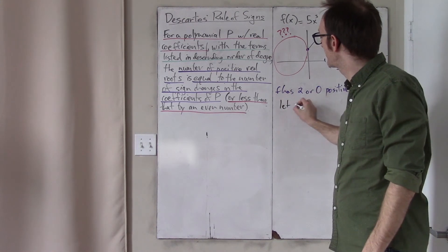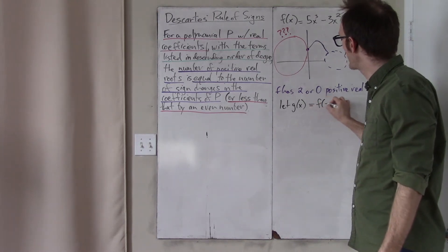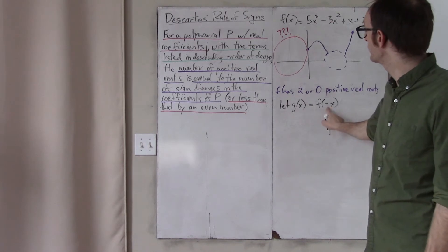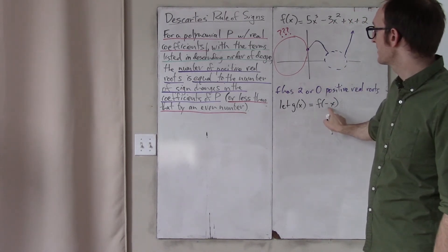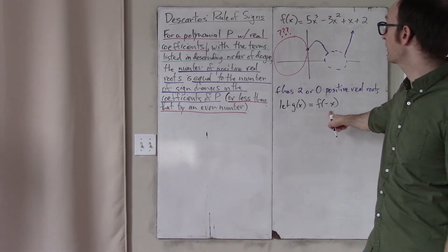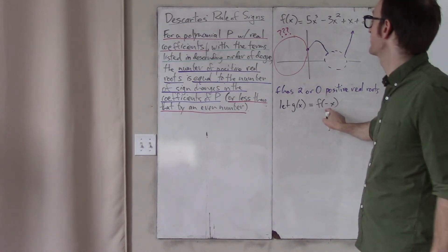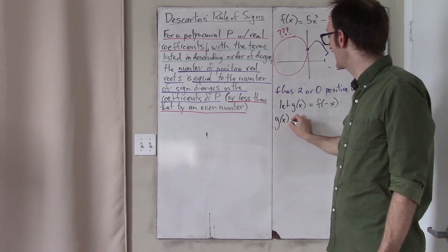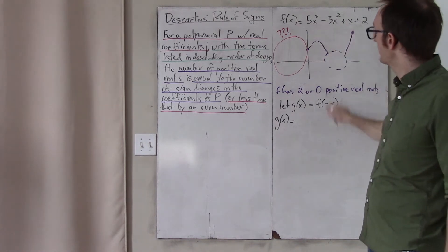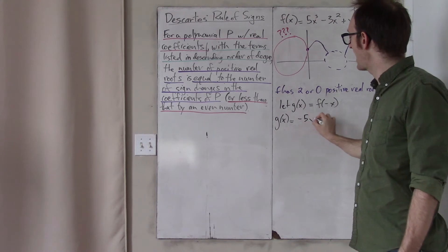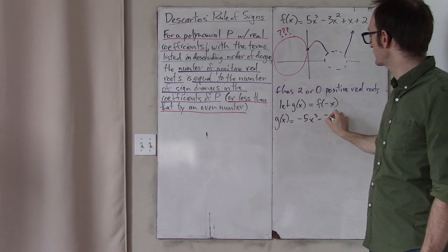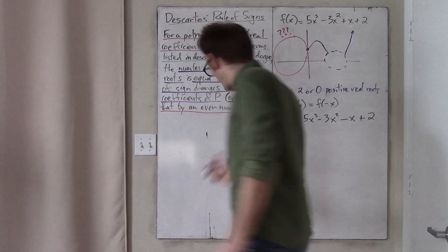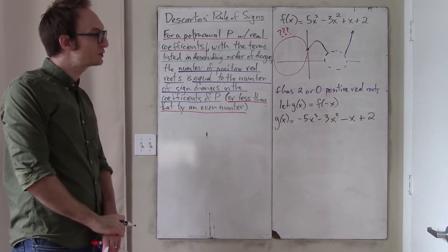Let me define a new function called g. What's g? It's just f of negative x. As you know from pre-calc, f of negative x is just the graph of f, but flipped over the y-axis. When you plug positive numbers into g, you're getting back what f does on the negative side. And when you plug in negative numbers, you're getting back what f does to the positive version of that number. So everything is flipping across the y-axis. What is this g function? Simply plug negative x into f. If you plug negative x into f, you get negative x cubed, so that becomes negative 5x cubed. When you square negative x, it's still x squared, so that's minus 3x squared. And then this becomes minus x plus 2.